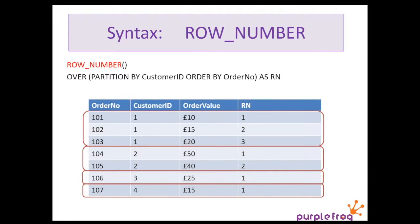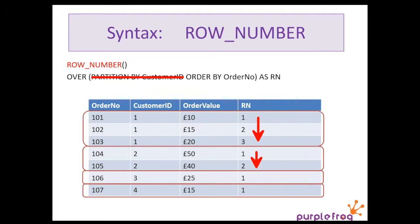On to probably the most useful one, or the most commonly used windowing function, and that is row number. Row numbers simply provide a sequence number of all of your data. You don't have to partition the data — you could leave off that partition and it would go from one to seven, something like that. But in this case we've partitioned by customer, and so we get one to three, one to two, one and one.